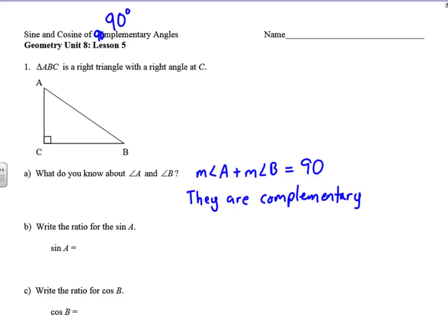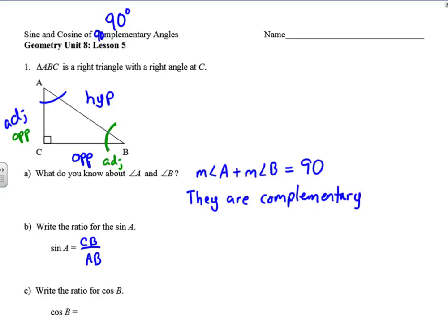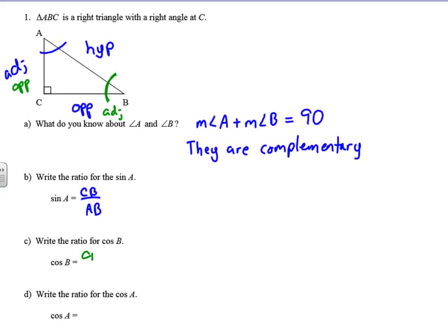If we want to write the ratio for the sine of A — here's our hypotenuse, here's the adjacent side to A, and here's the opposite side — we know that the sine is the opposite over the hypotenuse, so this would be side CB over side AB. Now, write the ratio for the cosine of B. For B, this side is the adjacent side and this side is the opposite side, so the cosine of B is the adjacent CB over AB.